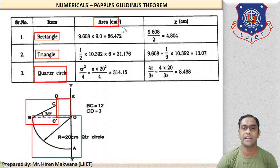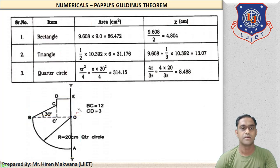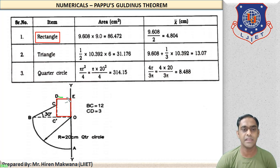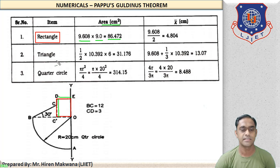First we find area in cm² for all three parts, then X̄ — the X-coordinate centroid measured from the Y-Y axis. For the rectangle, area = DE × DC' = 9.608 × 9 = 86.472 cm².